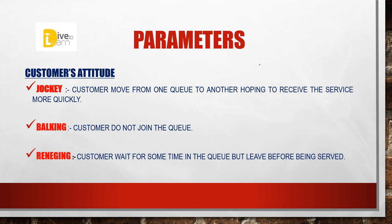[Hindi/Urdu] The next parameter is customer attitude, which is also important. Customers are of two types: one type has patience and the other is non-patient. Some customers are patient and wait; some are not patient. Based on this, we have defined customer attitude. The first type is jockey-type customers.